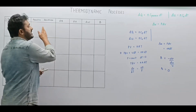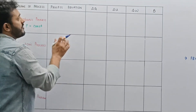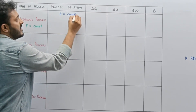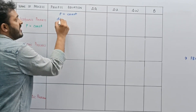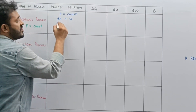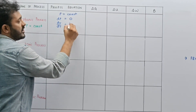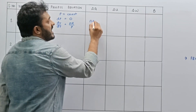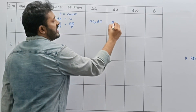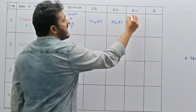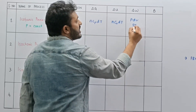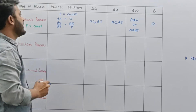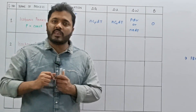Let us fill in the table. The process equation is P equal to constant, or DP equals 0, or in differential form DV/DT equals NR/P. For DQ we write N CP DT; for DU we write N CV DT; for work done we write PDV or NR ΔT; and bulk modulus equals 0 for the isobaric process.